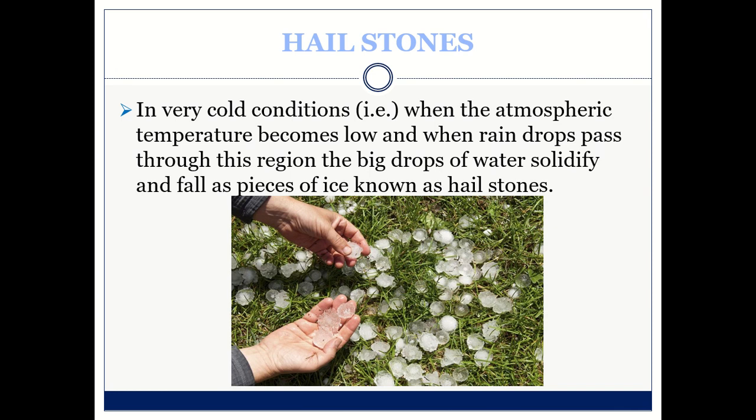Hailstones are different from snow. They fall down along with rain. In very cold conditions, when the atmospheric temperature becomes low and rain drops pass through this region, the big drops of water solidify and fall as pieces of ice known as hailstones.